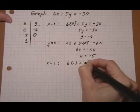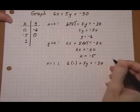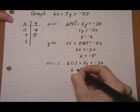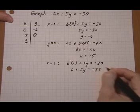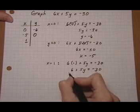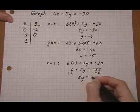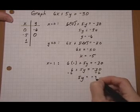6 times 1 plus 5y equals negative 30. Well that's the same as 6 plus 5y equals minus 30. And now we're just solving out the equation for y. So I take away 6 on both sides. That gives 5y equals negative 36.